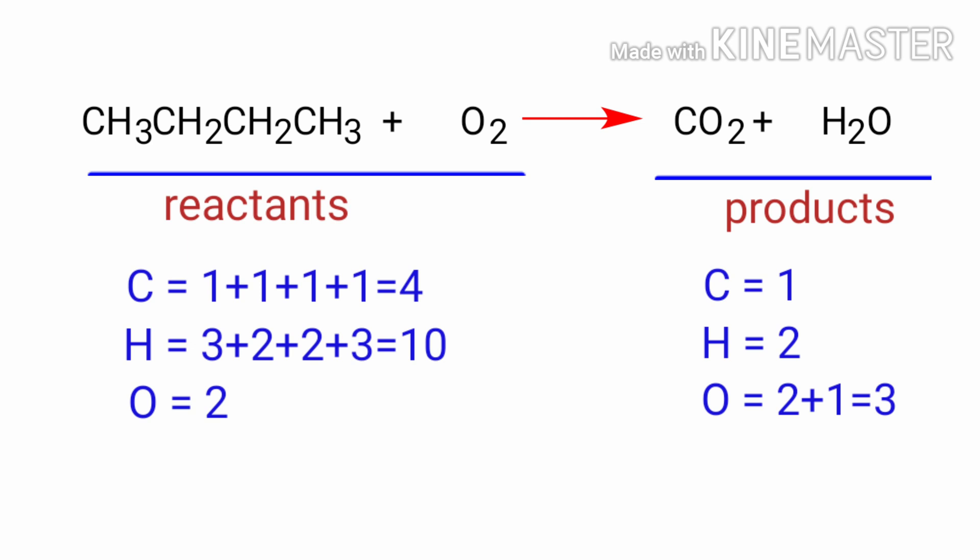If you look at this equation, the equation is not balanced. On the reactants side, there are 4 Carbon Atoms, 10 Hydrogen Atoms, and 2 Oxygen Atoms. On the products side, there are 1 Carbon Atom, 2 Hydrogen Atoms, and 3 Oxygen Atoms. The number of atoms are not balanced on both sides.